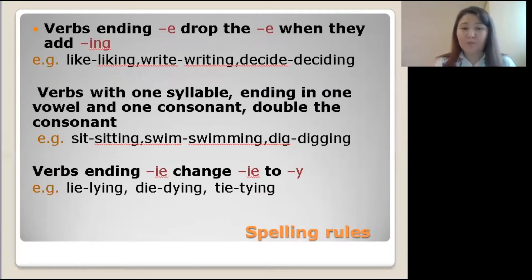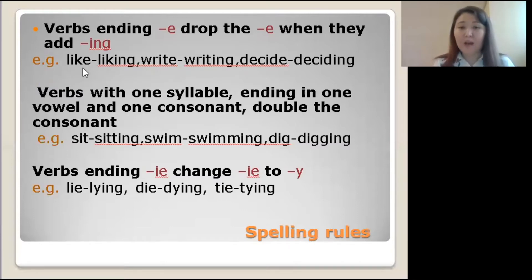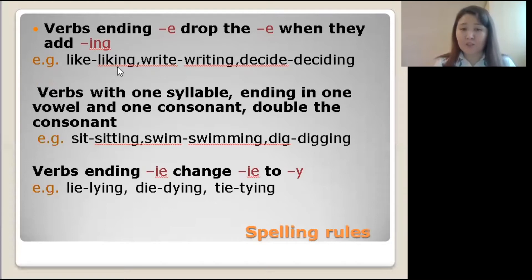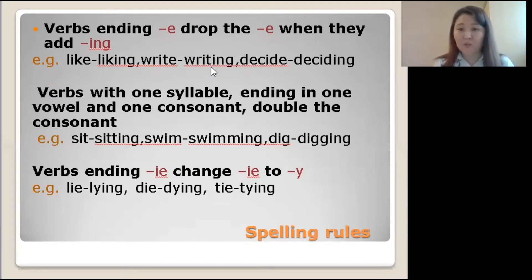Spelling rules. Verbs ending in 'e' drop the 'e' when they add -ing. For example, 'like' becomes 'liking' — the 'e' is dropped. The same pattern applies to 'write' → 'writing' and 'decide' → 'deciding,' and many other examples.